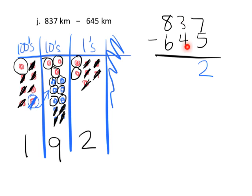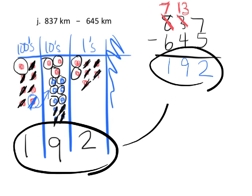Now let's verify with the standard algorithm for 837 minus 645. 7 minus 5 is 2. Then 3 minus 4—we can't do that without negatives, so we regroup from the 8 hundreds, making it 7 hundreds and giving us 13 tens. 13 minus 4 is 9. 7 minus 6 is 1. So our answer is 192—not much of a shocker that we get the exact same answer.